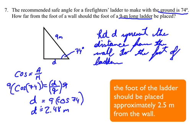So about 2.5 meters, so therefore, the foot of the ladder should be placed approximately 2.5 meters from the foot of the wall.